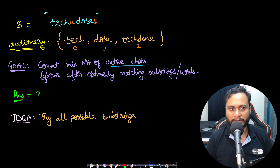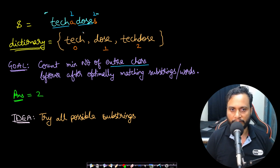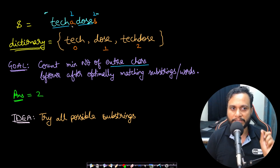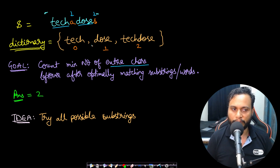Let's say the given string is 'TechDose' and the dictionary contains 'Tech', 'Dose', and 'TechDose' — three words. The question asks to count the minimum number of extra characters left over after optimally matching substrings. If we take out 'Tech' and 'Dose', that is more optimal because we only have to remove two characters: A and S. So the answer is 2 because two characters were left over.